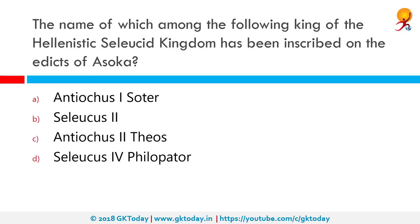The name of which among the following kings of the Hellenistic Seleucid Kingdom has been inscribed on the Edicts of Ashoka? The correct answer is Antiochus II Theos. Ashoka's Hellenistic contemporaries were Antiochus II Theos of Syria, Ptolemy II Philadelphus of Egypt, Magas of Cyrene, Antigonus Gonatas of Macedonia, and Alexander of Epirus.